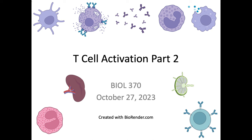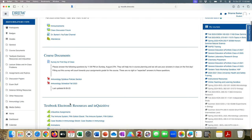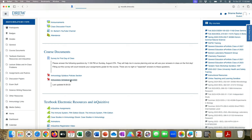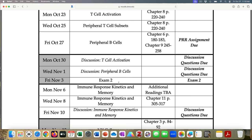We need to talk about some upcoming schedule details. If I look at the Moodle site and pull up the schedule, you can see that yes, I am behind. We're talking about T cell activation stuff today on October 27th, and the PRR assignment is due. On Monday we're going to be talking about peripheral T cell subsets, so we will not have discussion questions due. We are going to discuss a paper on Wednesday, and there are discussion questions due for that paper.